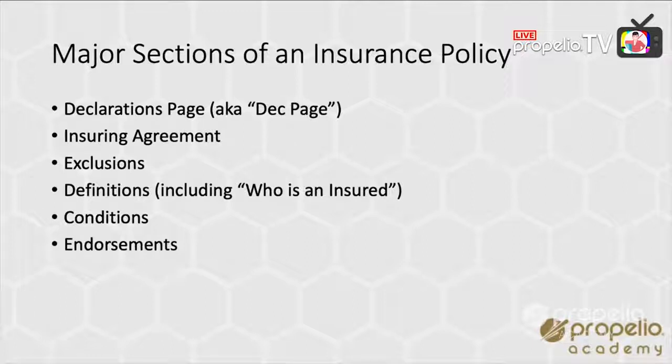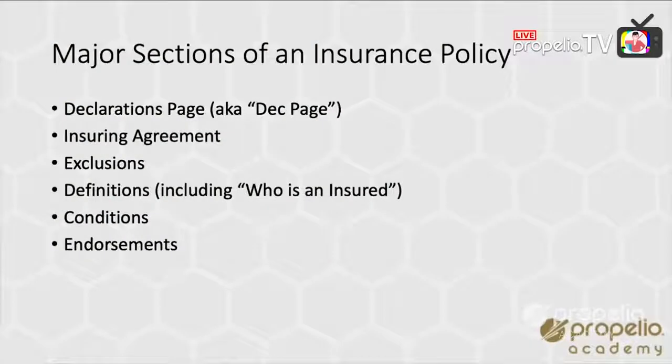Lastly, there are endorsements. You've got your base policy — whether it's general liability, commercial property, builder's risk, auto, work comp, umbrella, excess, whatever. As written, it may not have that much coverage. But endorsements is like bolting on additional coverage to the base to get exactly what you need for your unique situation. So to recap: we've got the declarations page (aka the deck page), the insuring agreement, the exclusions, the definitions, the conditions, and the endorsements. These are the major parts of an insurance policy, and that's something you need to be very aware of as we go forward.